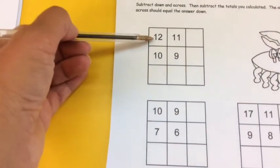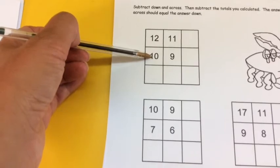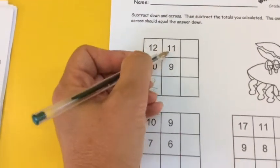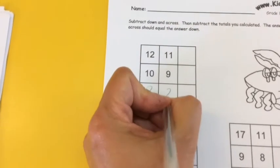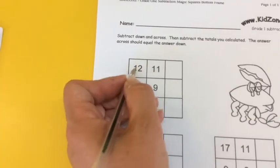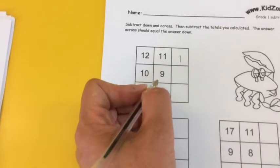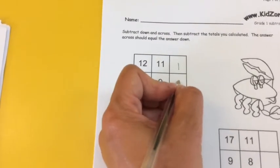What you've got to do is subtract the top number from the bottom number, so 12 take away 10 is 2, and 11 take away 9 is 2. What about 12 take away 11, if we go across the row now, that's 1 isn't it, and then 10 take away 9 is also 1.